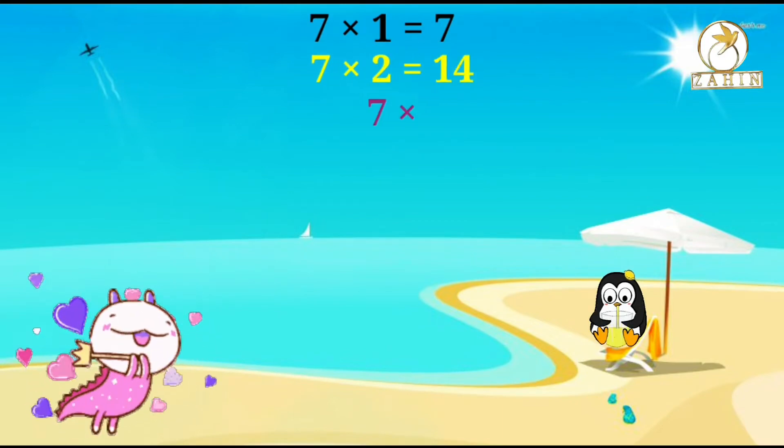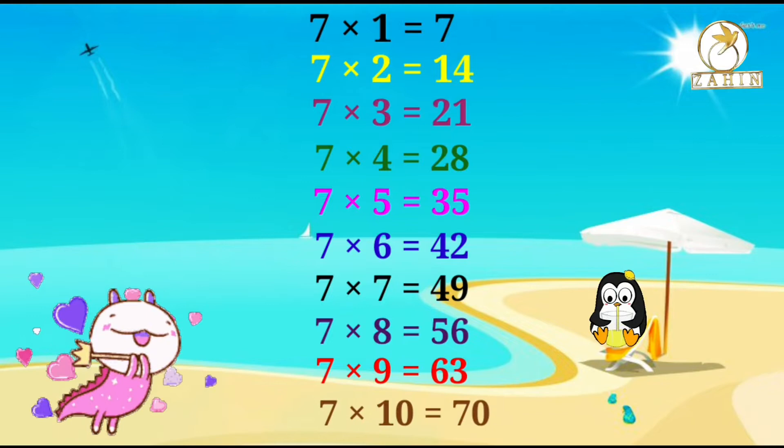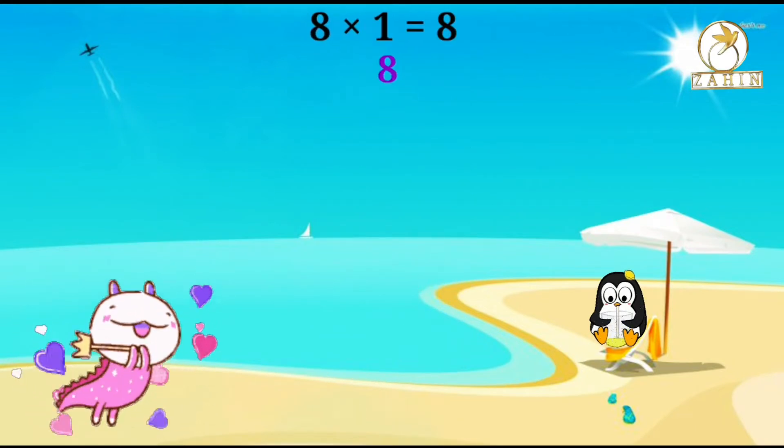7 times 2 equals 14, 7 times 3 equals 21, 7 times 4 equals 28, 7 times 5 equals 35, 7 times 6 equals 42, 7 times 7 equals 49, 7 times 8 equals 56, 7 times 9 equals 63, 7 times 10 equals 70. 8 times 1 equals 8.